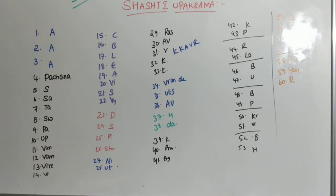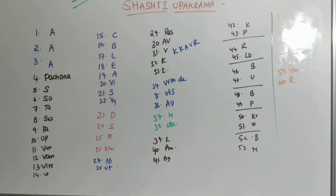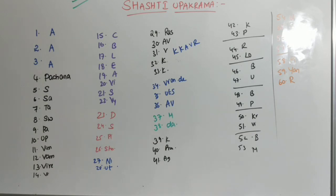By the name itself, you will come to know what Shashti means — 60 — and what Upakrama means — kinds of treatments. These 60 are the types of treatment principles which are followed in treating the Vrana. You have to form a trick to remember all those 60 names in an easy way, because it is not such an easy thing to learn and remember all these 60 names. After this session, you will come to know a clear way of representing this Shashti Upakrama.